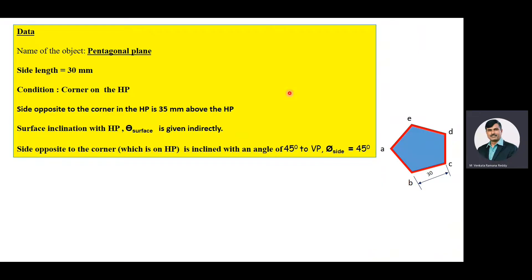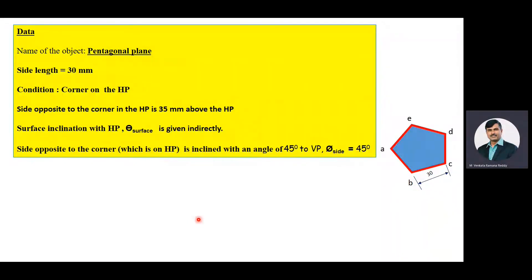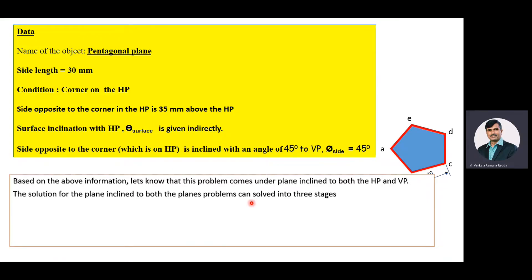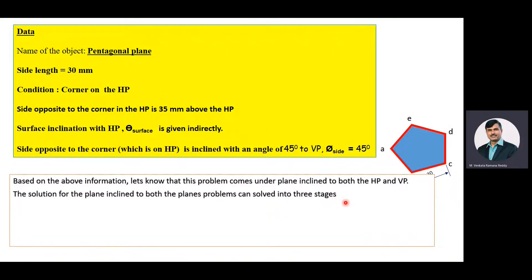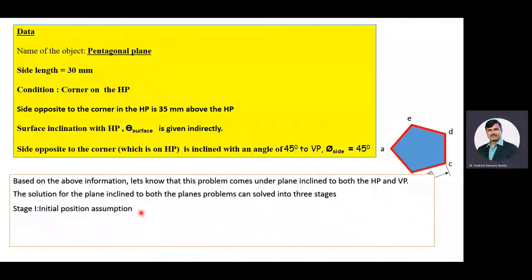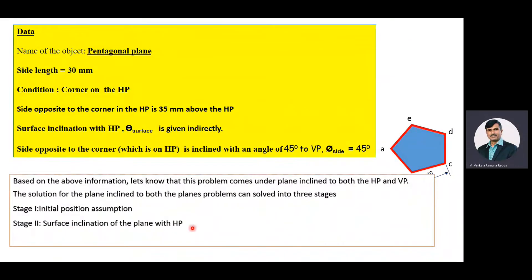From this data, we know that the surface of the pentagonal plane is inclined to the HP and the side opposite to the corner is inclined at an angle of 45 degrees to the VP. That is, this particular problem comes under a plane inclined to both planes concept. This problem can be solved in three stages: the first stage is initial position assumption, the second stage is surface inclination of the plane with HP, and the third stage is side inclination of the plane with VP.